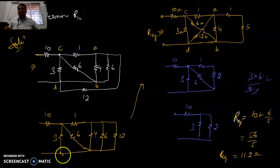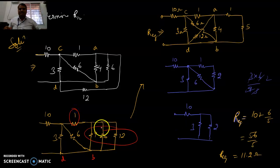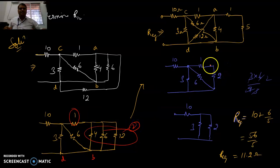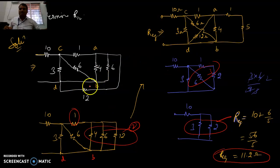This 12 ohm looks like it is in parallel with 6 and 4. D and B are merged — we can take this point from here because they are the same nodes. These three are in parallel and in series with 1. This entire thing becomes 2, 2, and 1 in series giving 3. Then 3 and 6 in parallel gives 2, and finally R equivalent is 11.2 ohms.